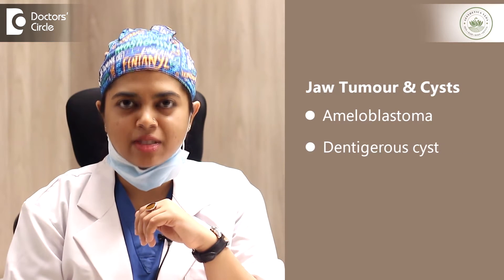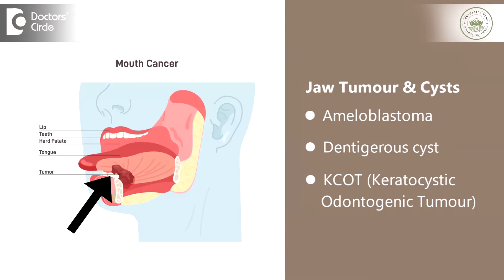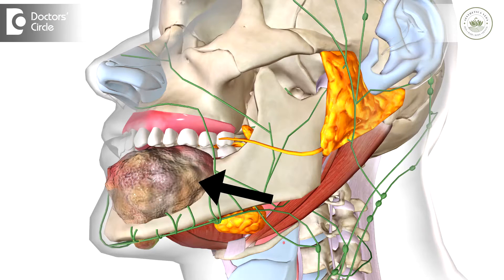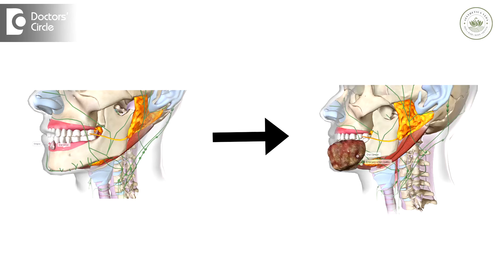Jaw tumors and cysts like ameloblastoma, dentigerous cyst, and KCOT are cysts and tumors originating from teeth. Generally, a tooth is either erupted or unerupted and can be associated with a third molar tooth or a tooth within the jaw itself. These tumors or cysts generally form localized within that area and slowly grow into their current size, position and shape.